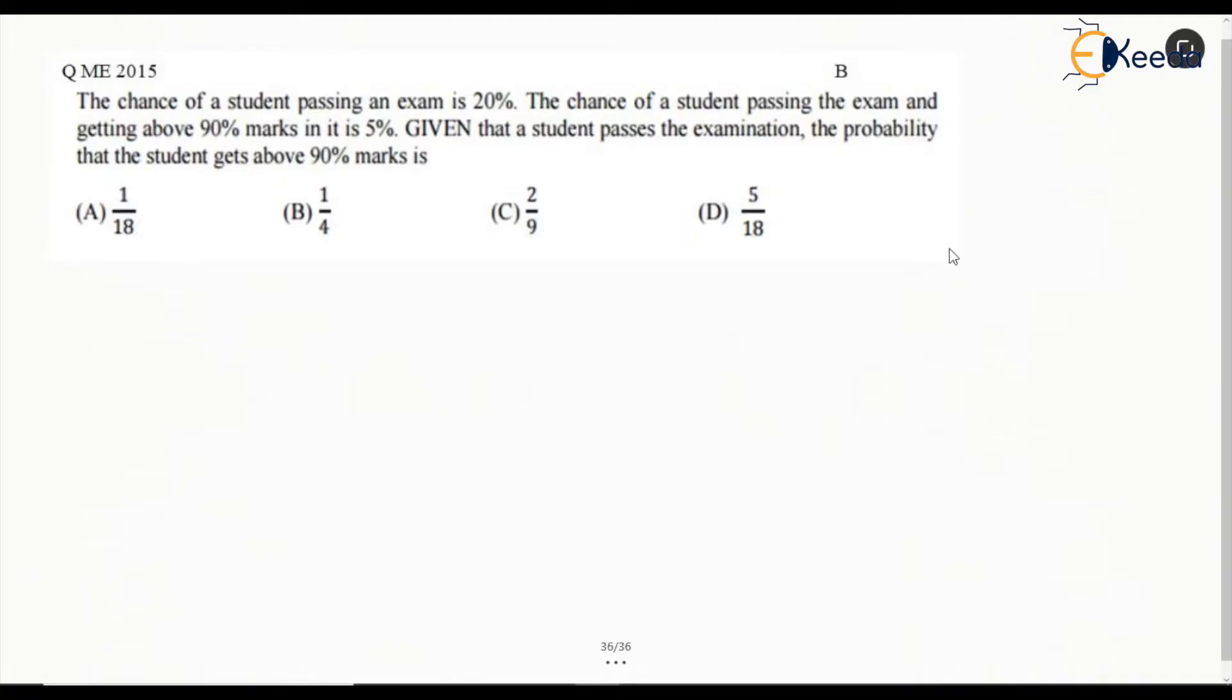It says the chance of a student passing an exam is 20%. The chance of a student passing the exam and getting above 90% marks is 5%. Given that the student passes the exam, probability that the student gets above 90% marks.